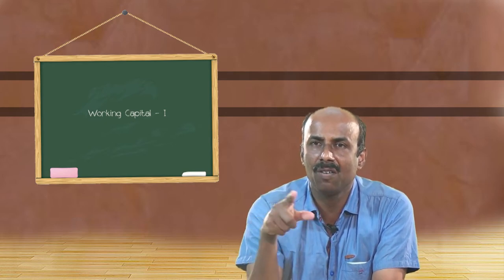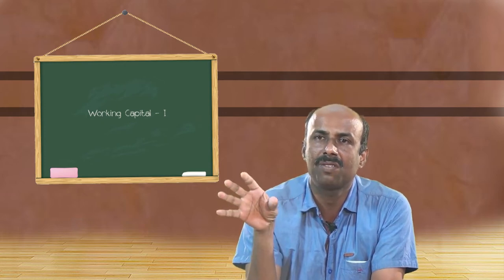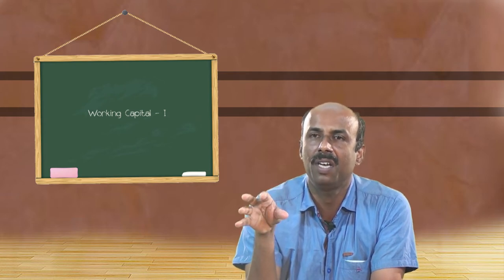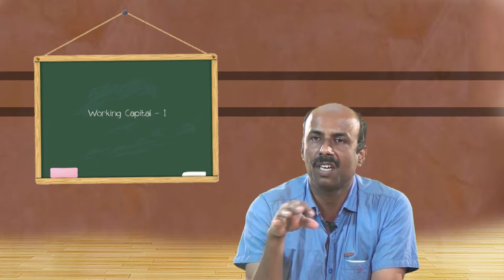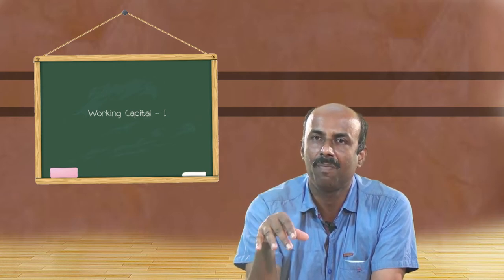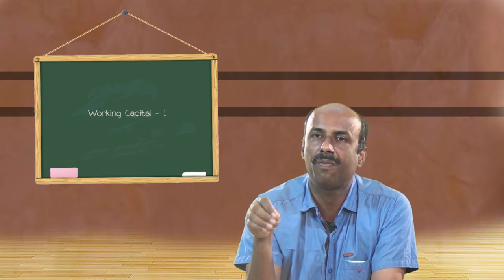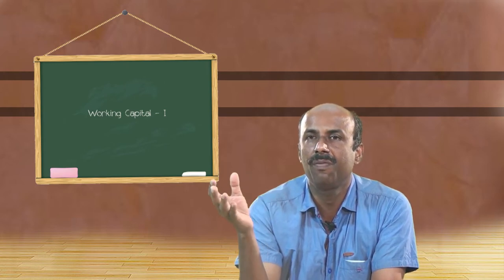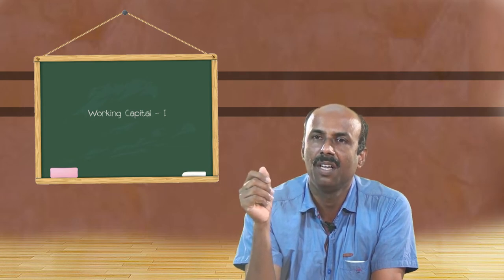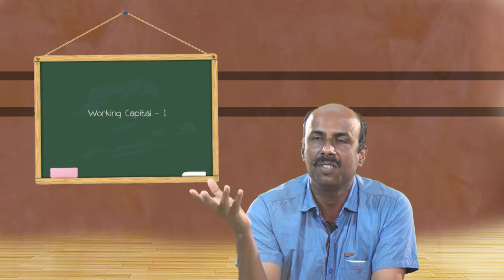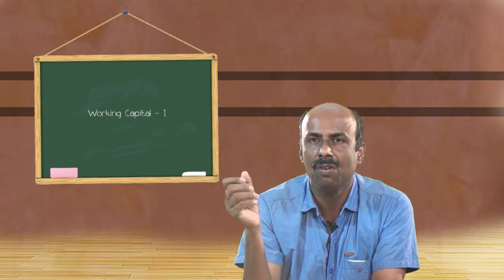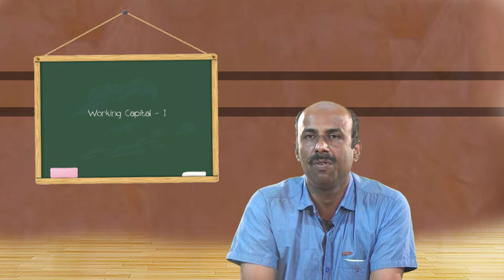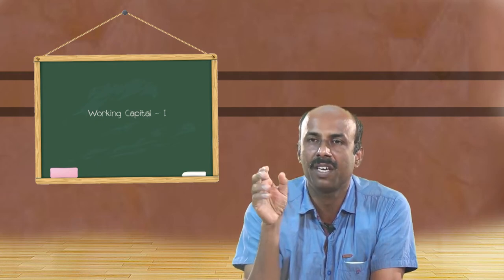According to the operating cycle concept, there must be proper working capital at all times. When purchasing raw materials, funds may be tied up for a month, a week, or some days. Transforming semi-finished goods takes time; finished goods may remain in stock before being offered for sale. If it is a credit sale, we have to wait for debtors, then for bills receivable to be converted — all of that takes time. During this entire time period, we should have proper working capital to meet demands. That is the operating cycle concept.